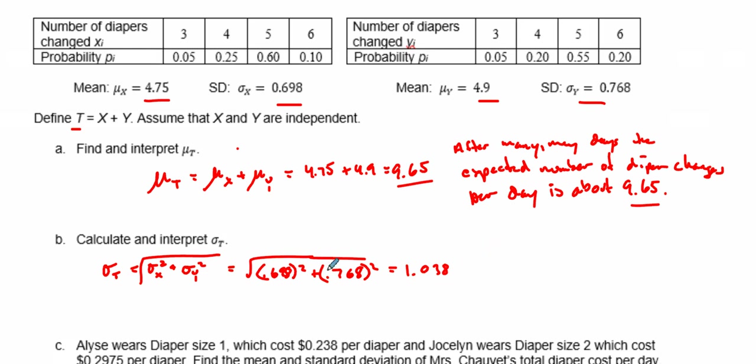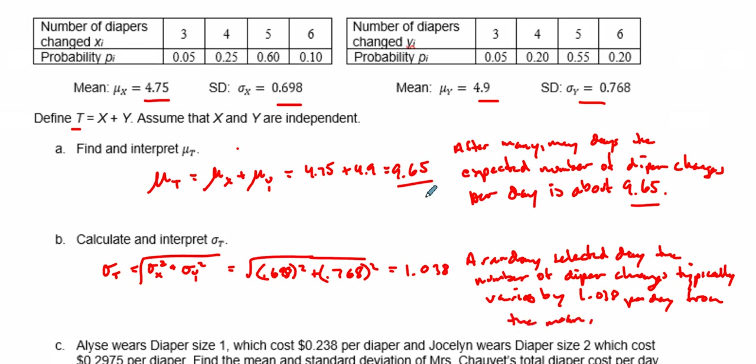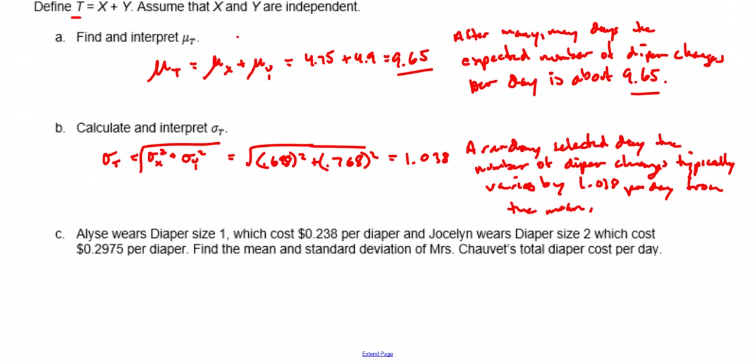What we know is that a randomly selected day, the number of diaper changes typically varies by 1.038 per day from the mean, the mean number of diapers which is 9.65. So any random day, the number of diaper changes typically varies by 1.038 per day from the mean. That's what we find with our standard deviation. That's what typically varies from the mean.